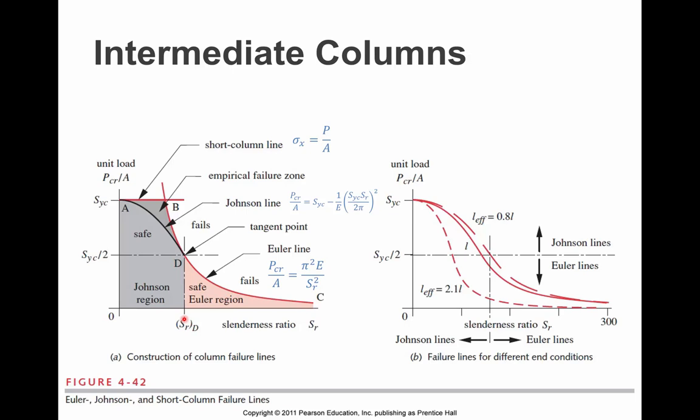So the cutoff point is a slenderness ratio that tells us exactly when that switch is going to happen. And you can find it from either equation. What we're going to do for P critical over A, what we're going to put in for that value is the yield compressive strength of the material divided by 2.